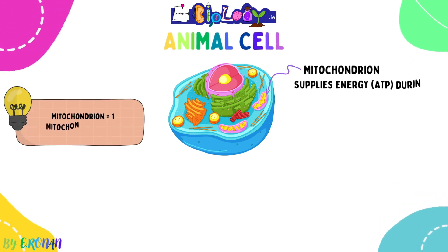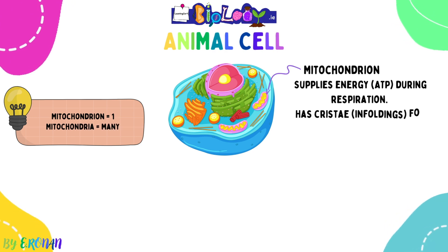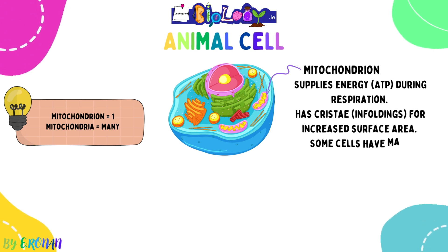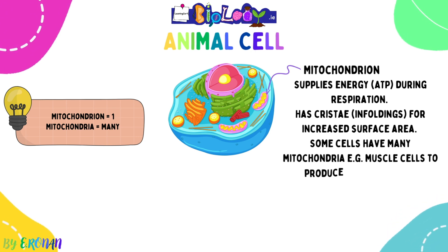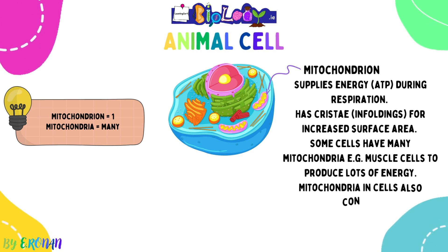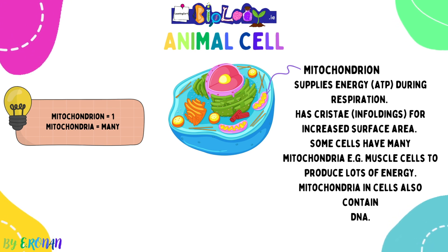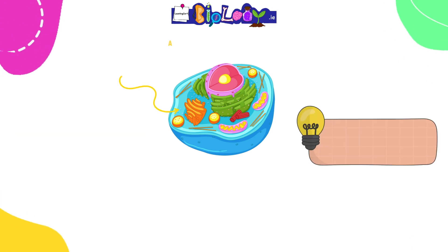Number three is the mitochondria — mitochondrion is the singular. This organelle supplies energy in the form of ATP during respiration. It has numerous infoldings known as cristae to increase the surface area and produce more energy. Some cells have more mitochondria than others — for example, muscle cells, because they contract more regularly. Mitochondria also contain the genetic material DNA.